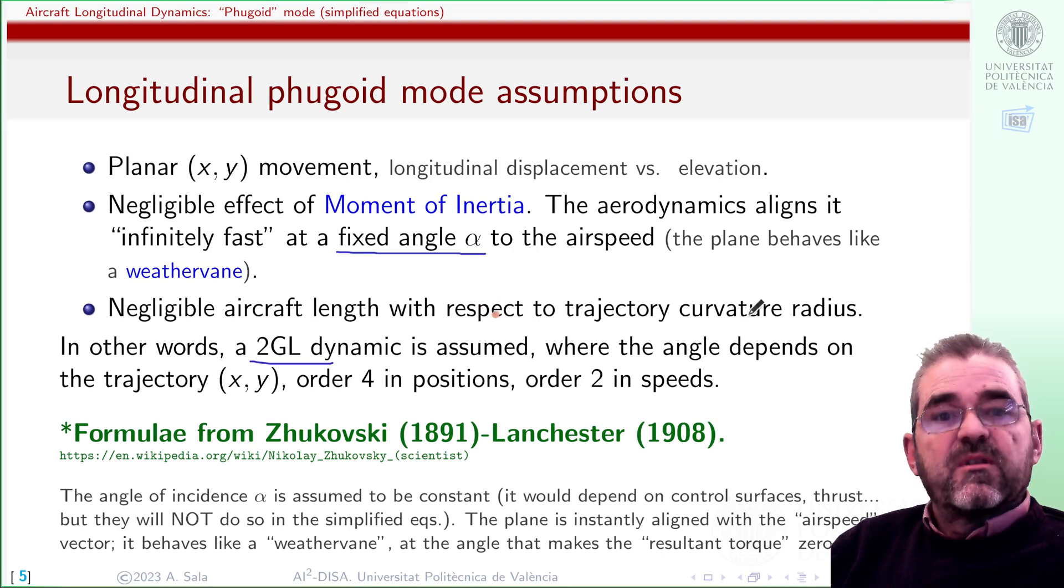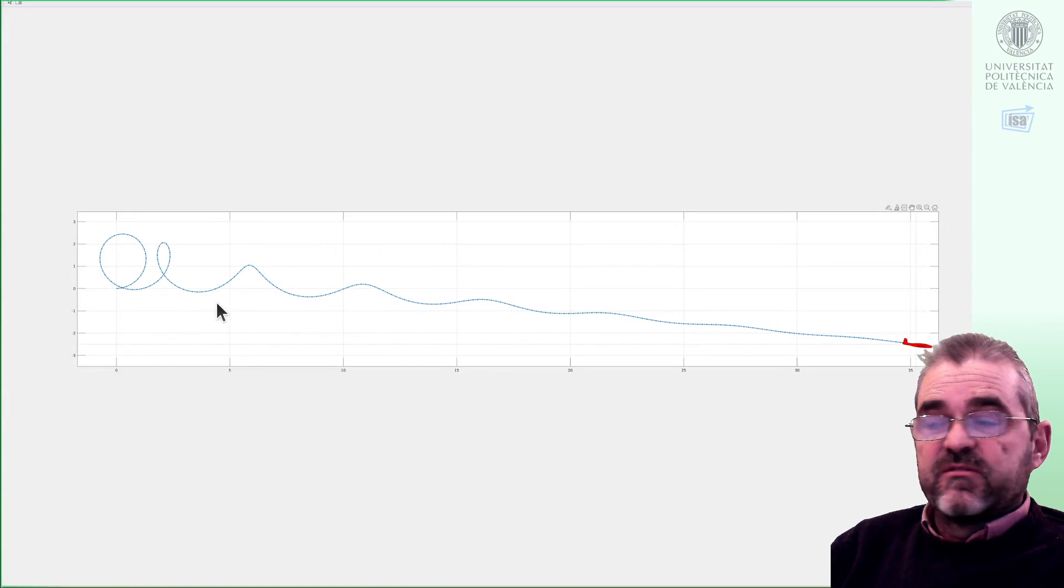The third assumption is that of negligible aircraft length compared to the trajectory curvature radius. Again, smooth maneuvers, so that possibly the starting phases of this simulation in these initial loopings will not be described with enough accuracy by the equations we are going to put forward. But on the other hand, the equations will be extremely simple.